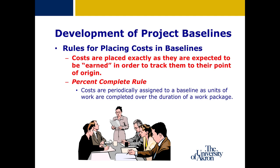The percent complete rule is key to calculating earned value. To be objective in determining percent completion on any given task, there must be some type of gauge — whether it's lines of code, bundles of shingles, etc., depending on the project. Another concept is that at around 80% to 90% complete, no additional earned value is added to a task until it's 100% complete. This addresses a common problem where tasks are reported as 99% complete week after week.